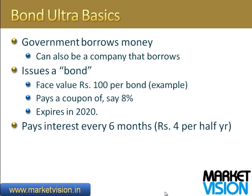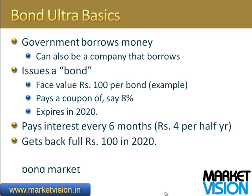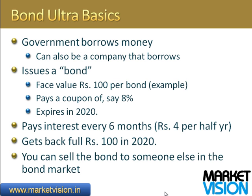The interest payment typically on government bonds is every 6 months. That means in this example it is 4 rupees every 6 months. And in 2020 you get back the full 100 rupees. Now if you buy the bond, you pay the government 100 rupees. You can sell the bond to someone else in the bond market tomorrow — you don't have to wait for the entire 10 years.